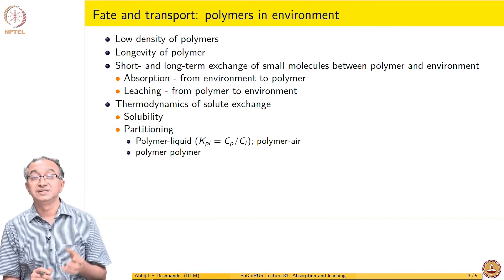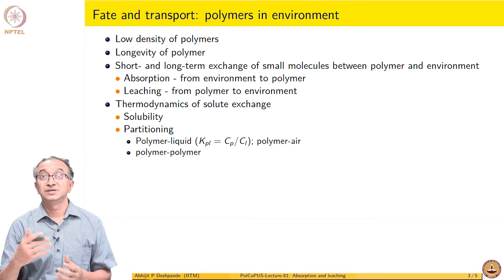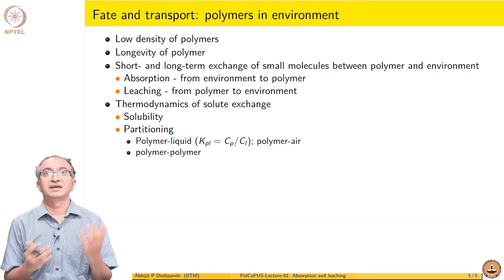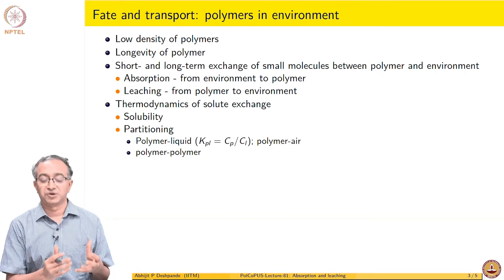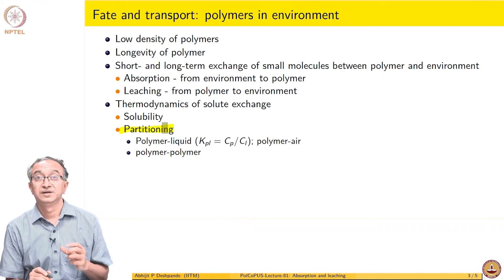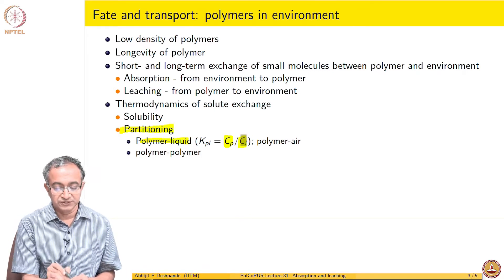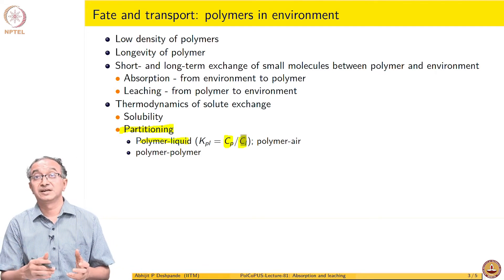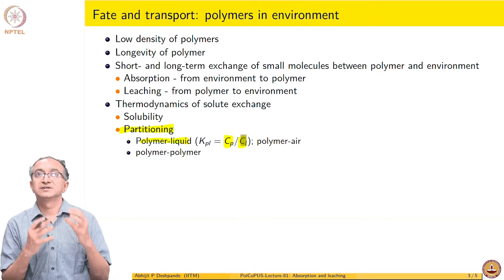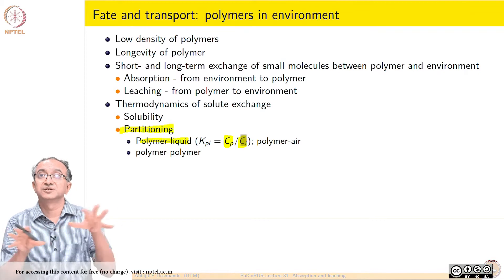The other important thing is: even if solubility is high in polymers, if the solute is not getting transferred to surrounding phases — not getting transferred to water or air — then at least it is confined to the polymer phase. So the partitioning between different phases is something we have to worry about. It could be polymer and water, and partitioning is generally thought of as the concentration in the polymer phase related to the concentration in another phase. The ratio of these two tells us the carrying capacity of one phase with respect to the other — how does a solute get partitioned between the two phases.